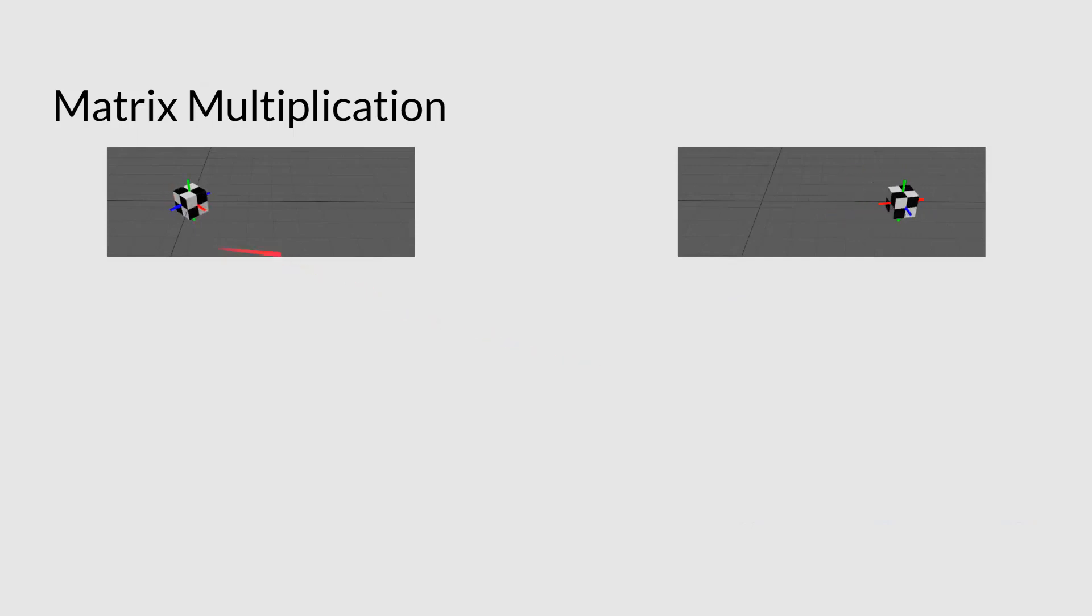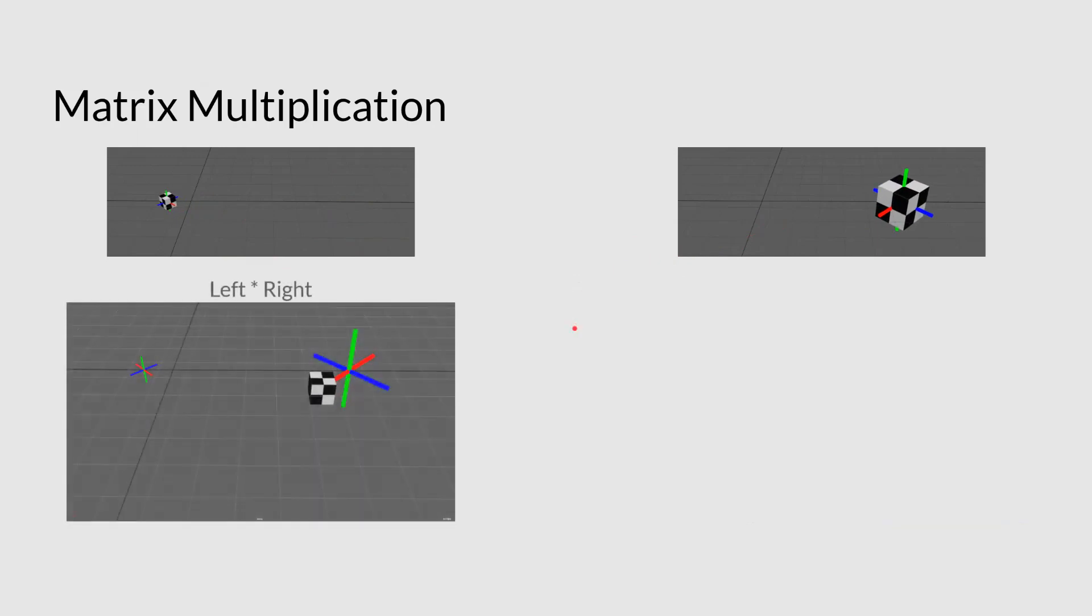Now, let's just look at how it actually would work if we multiply together some transforms. So I've got these two transforms animated here. Now, let's look at what happens if we multiply the left one by the right one. So you can see now we're taking both those matrices and we basically apply it to the cube. So what happens is that first the cube is going to get all of this, and then it will be modified by this again, like on top of that.